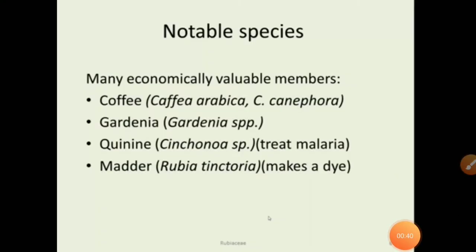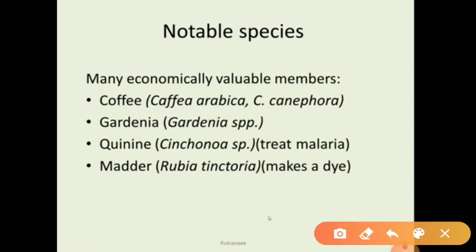Let us have a look at certain notable species belonging to the family Rubiaceae. It includes plants like Coffea arabica. Then there is the plant Gardenia jasminoides. And the quinine-yielding plant Cinchona also belongs to the same family.